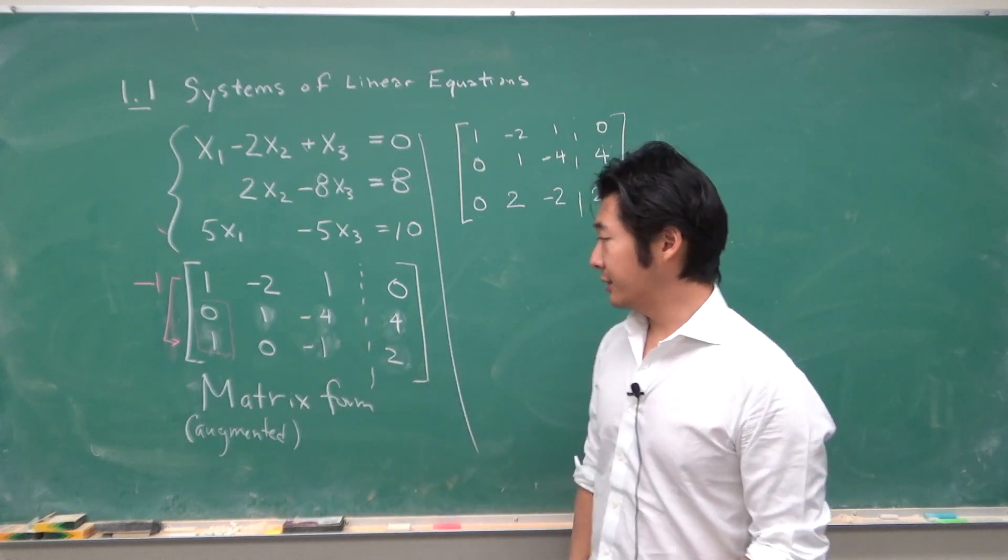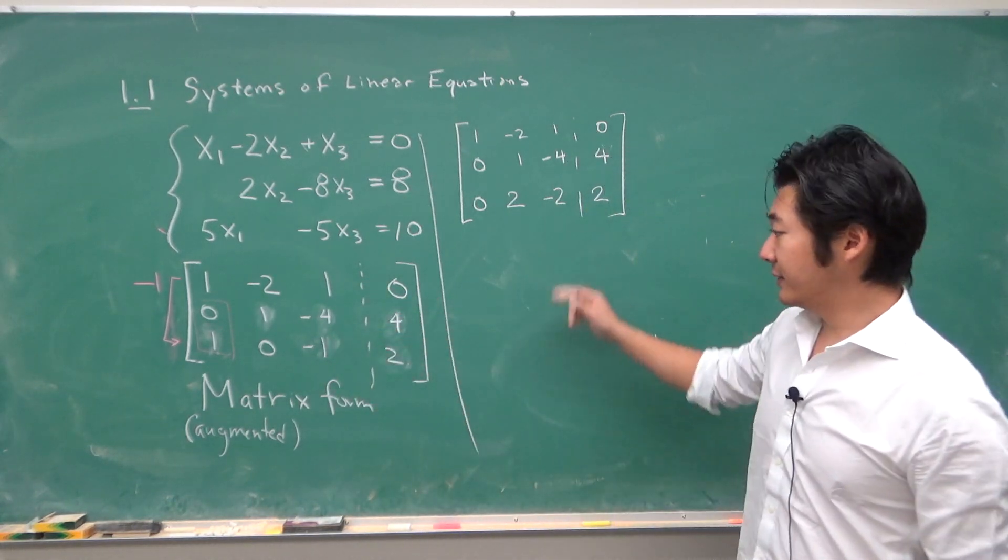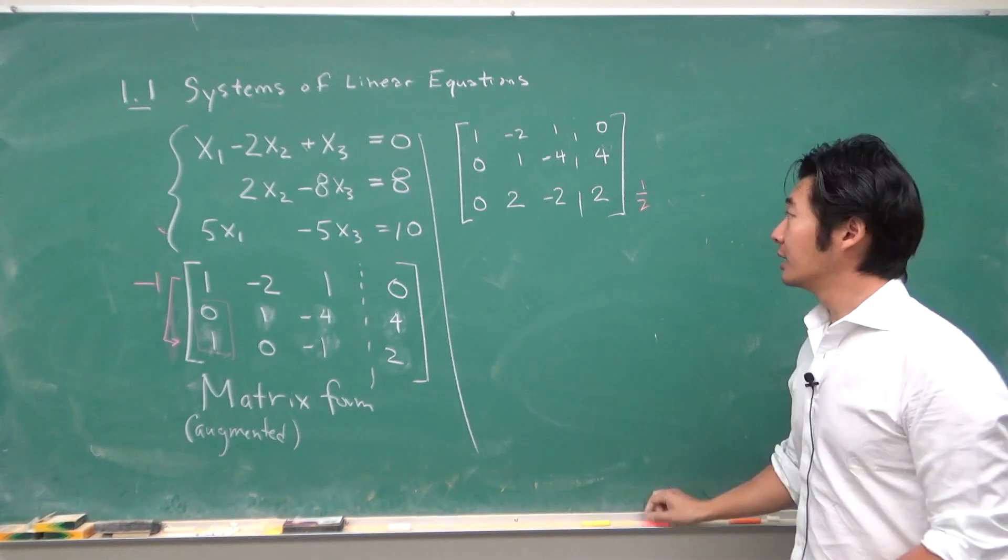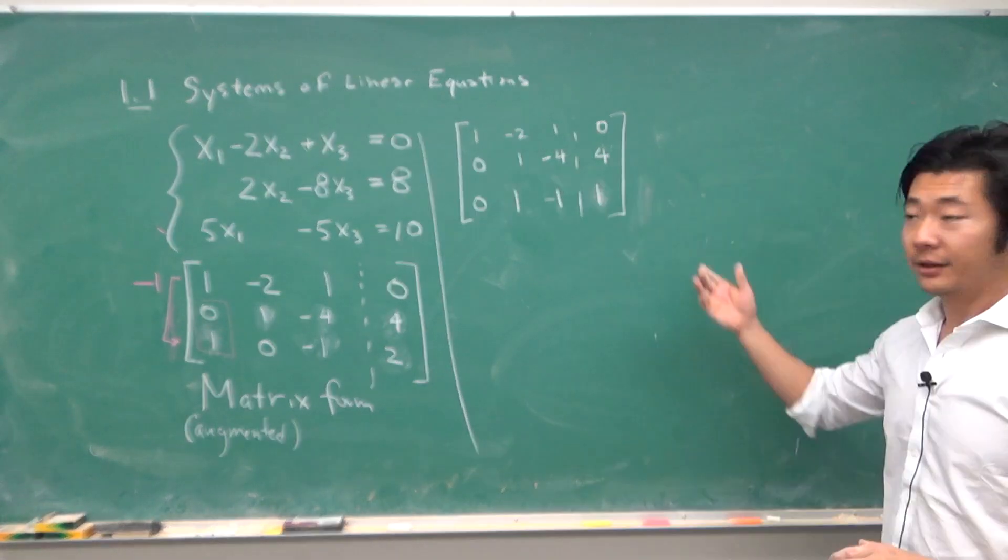And so we get this because negative 1 plus 1 is 0. 2 plus 0 is 2. Negative 1 minus 1 is negative 2. 0 plus 2 is 2. So this row changes. We can divide by 2 so that this becomes this.